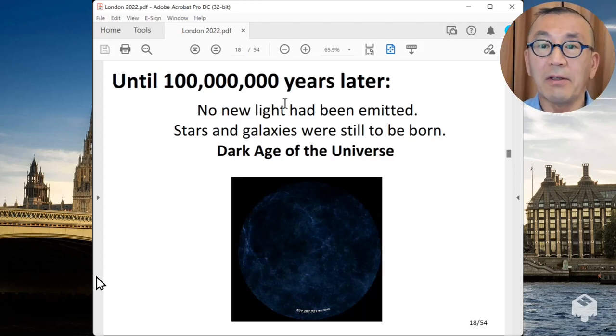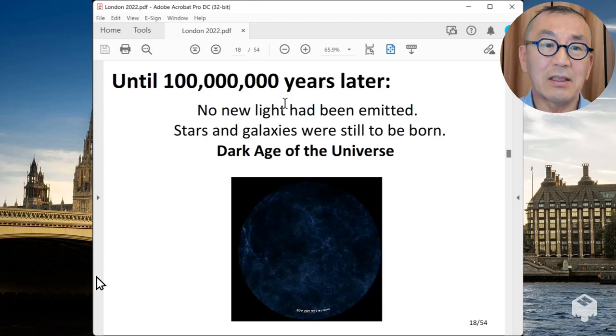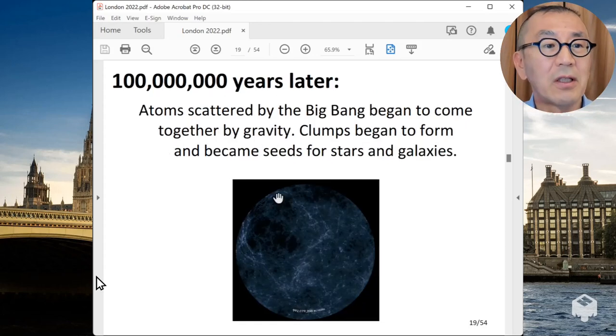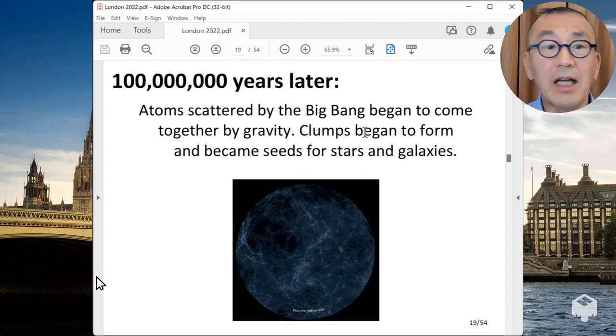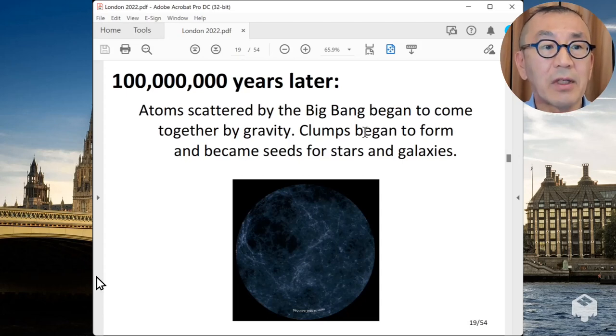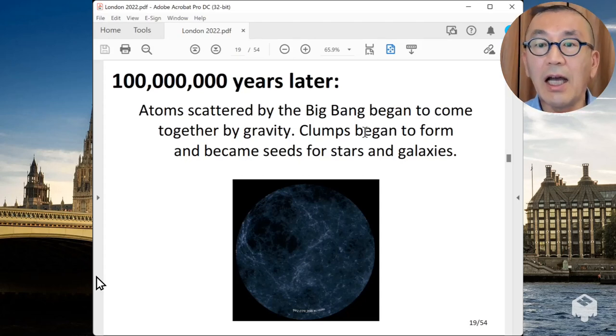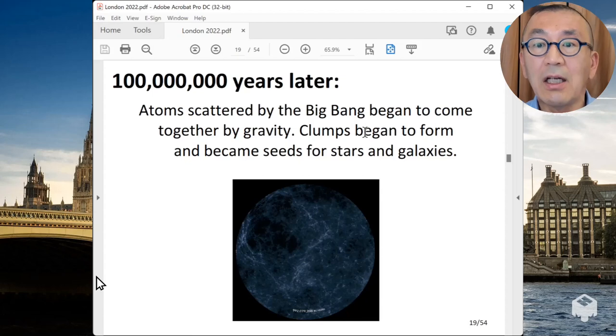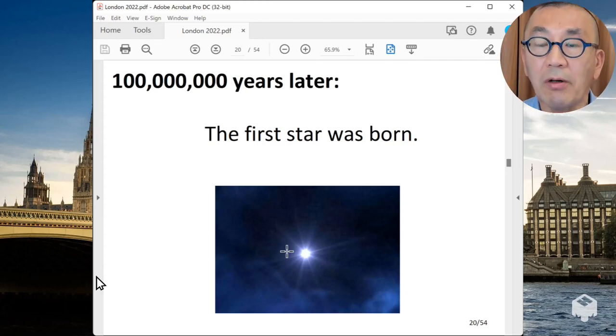There was this Dark Age of the Universe about 100 million years after the birth of the universe. A historian tells us that there are also Dark Ages in Europe. But Dark Ages were not necessarily a boring time. And there are a lot of things that happened that prepared the rebirth of civilization at the Renaissance. And similar things happened in the universe. So even during this Dark Age of the Universe, the seed for the stars and galaxies were sort of made. Because atoms scattered in the Big Bang began to come together by gravity. And once things started to gather, the gravity attracted more matters.